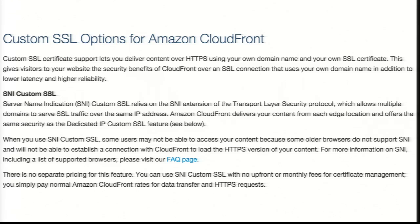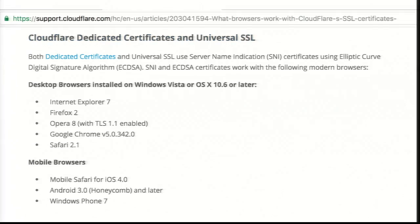For example, on Amazon CloudFront, if you're willing to turn on SNI for your website, it goes from $600 a month to $0 a month for the add-on cost of using a certificate. That's a pretty major change. On CloudFlare, their universal SSL plan — the free plan — requires SNI. So if you're comfortable using server name indication, you may not have to go to a hugely expensive plan.